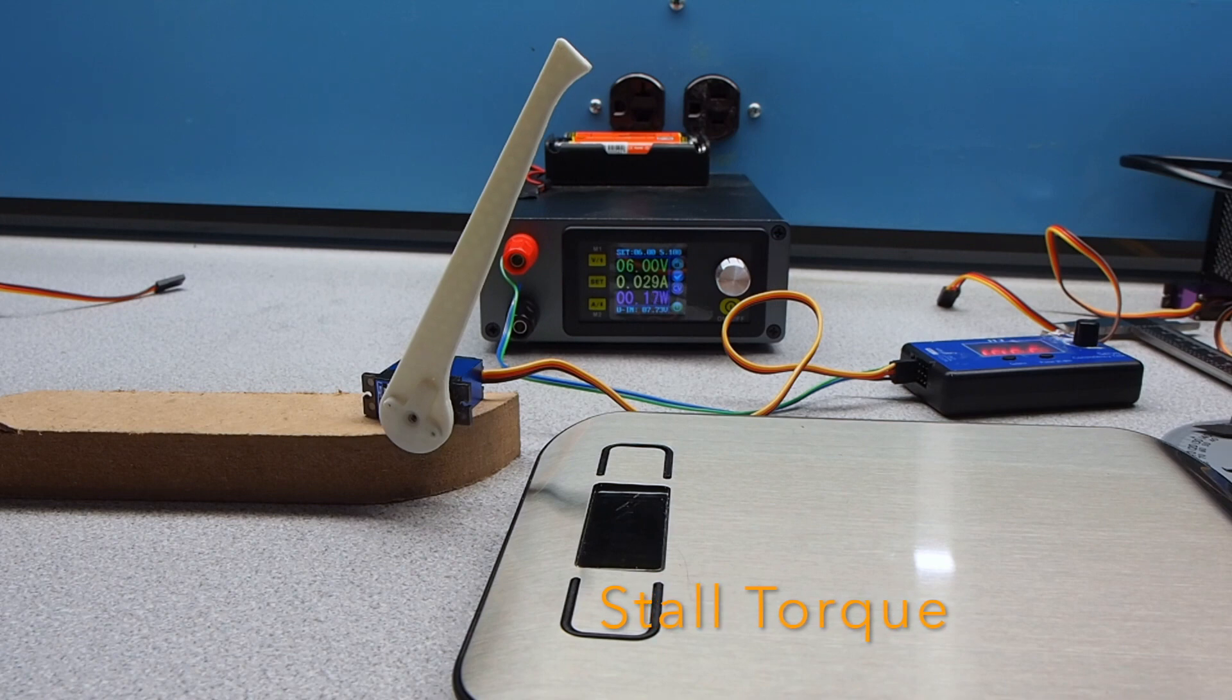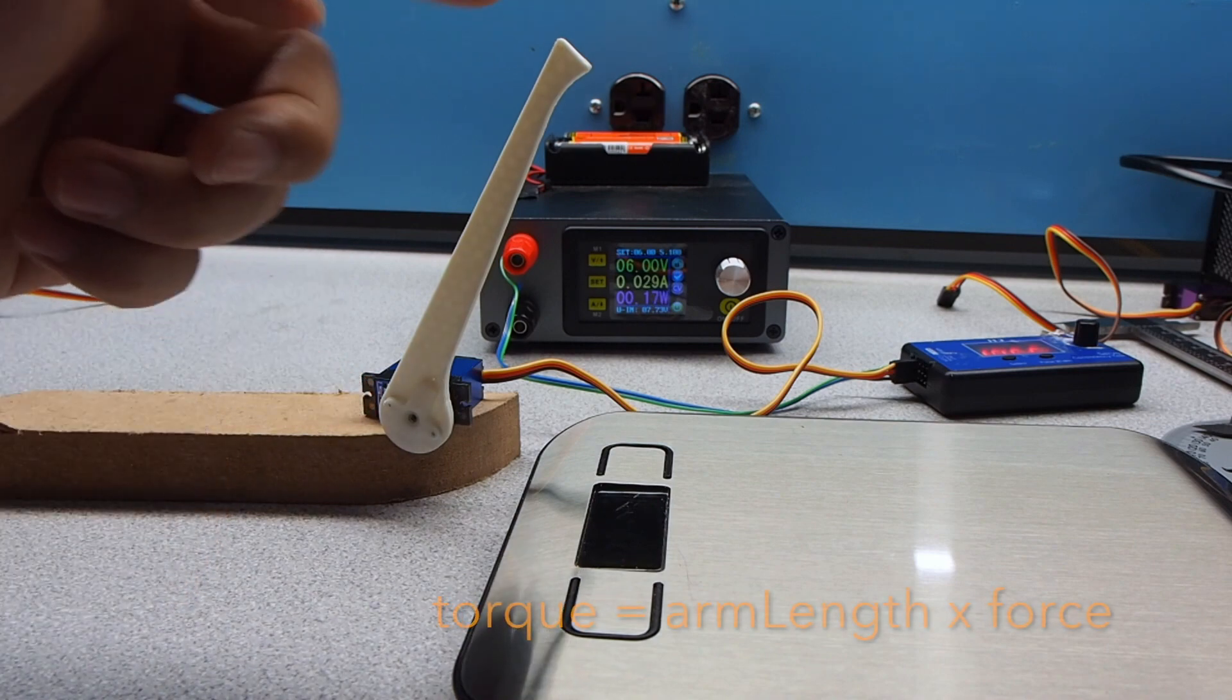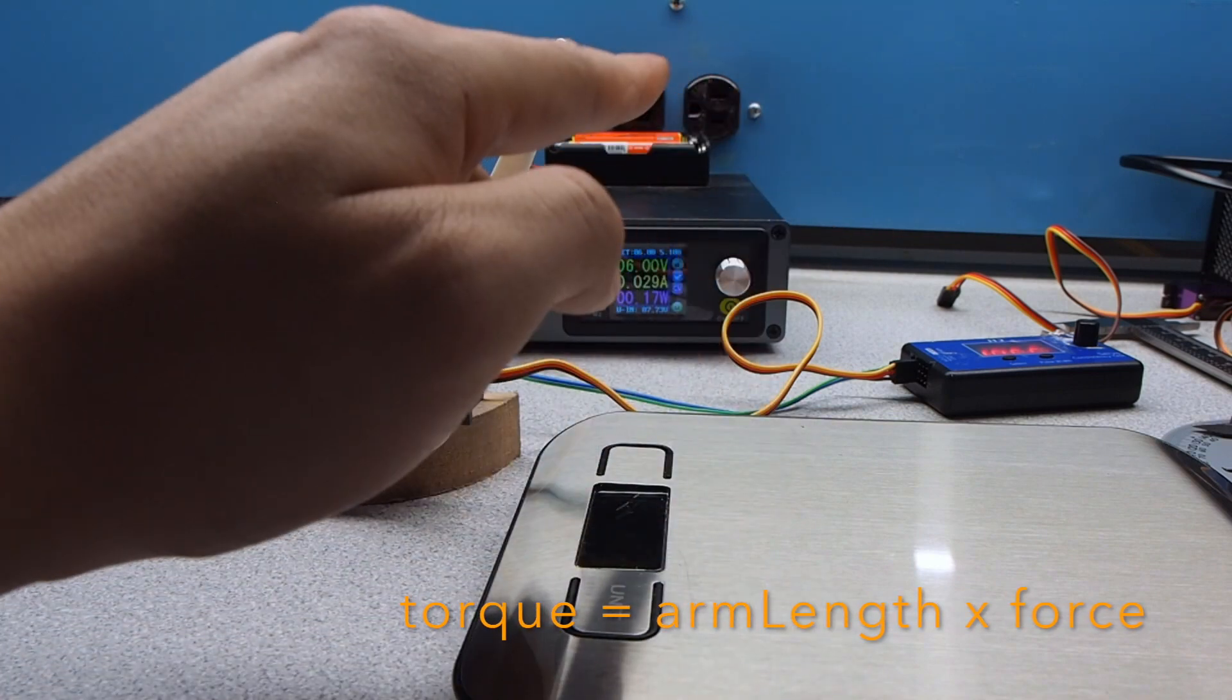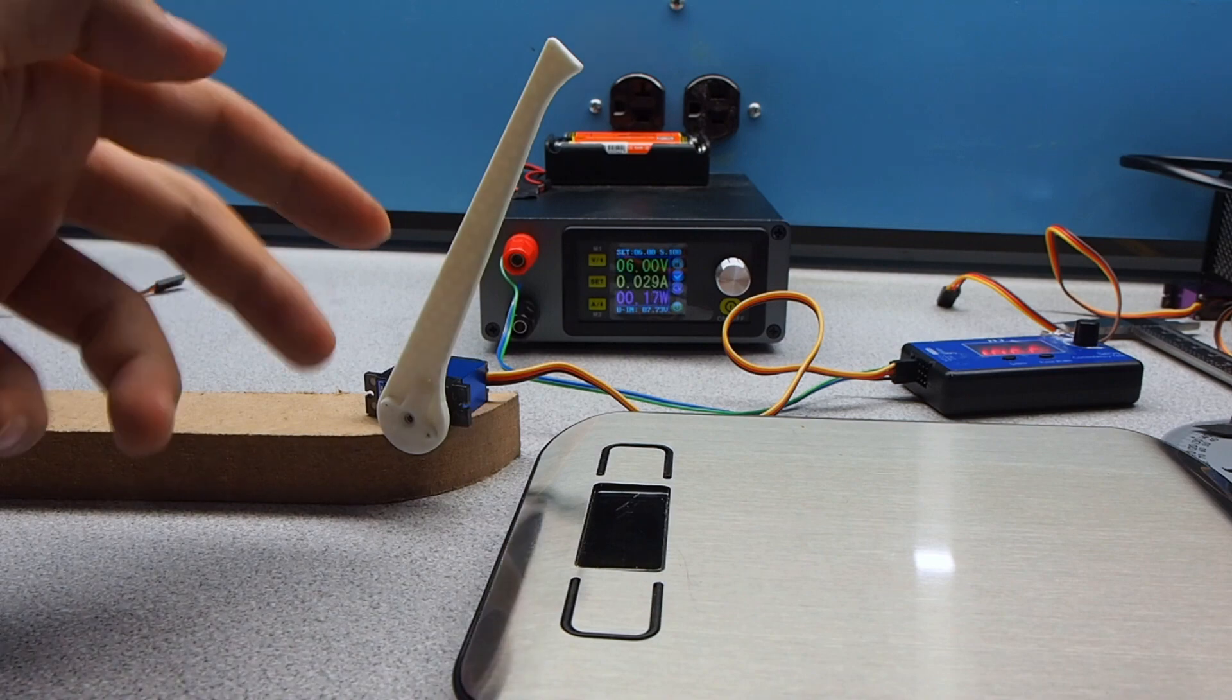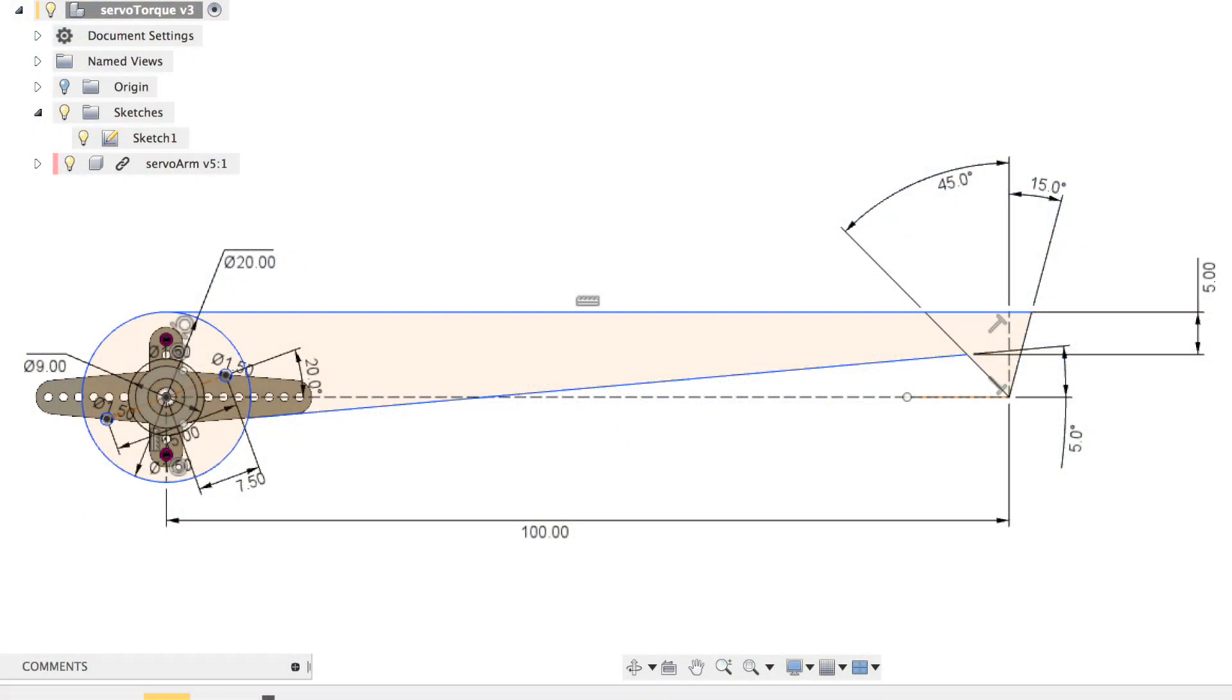To measure the torque, I need some setup. Basically, I need to know the length of the servo arm and the force used to stop it in the vertical direction to the servo arm. So I made this 3D printed servo arm, which is 100 mm.